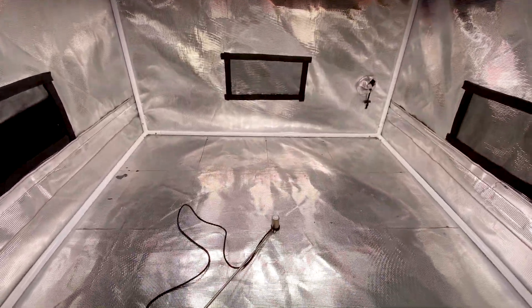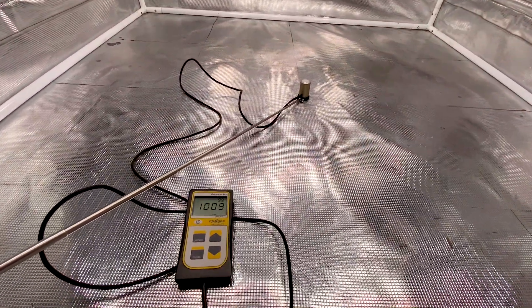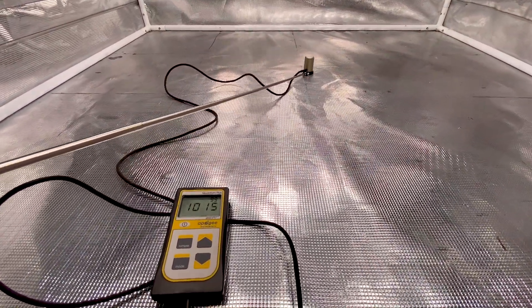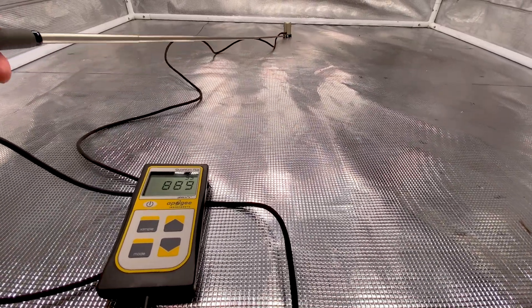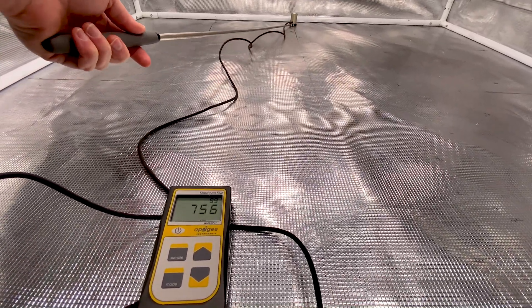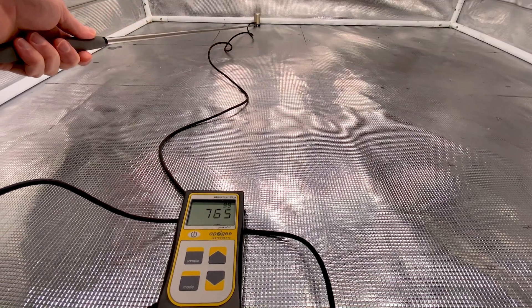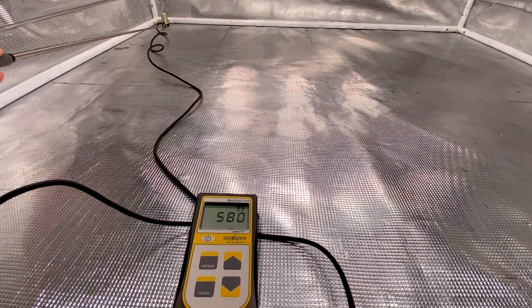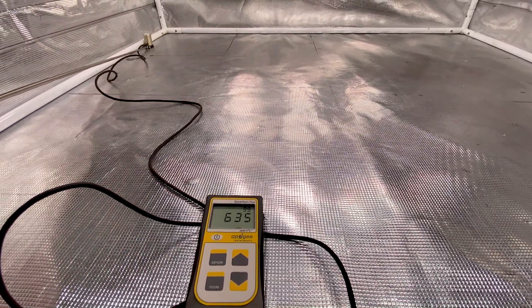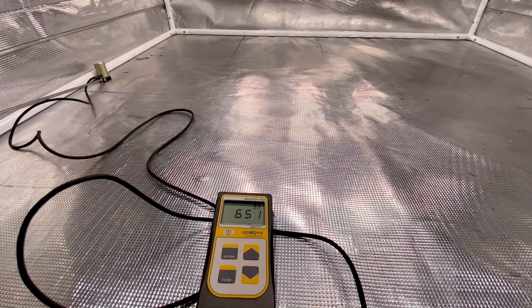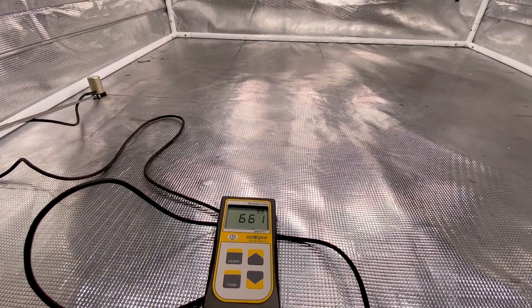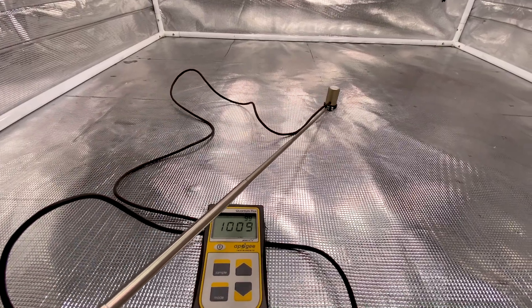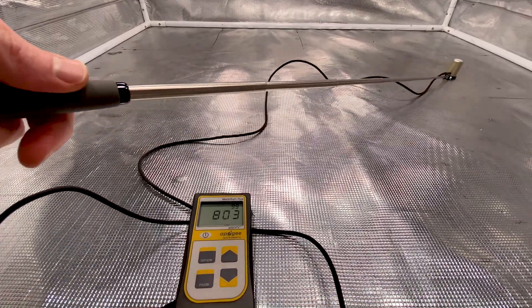The next readings at 24 inches where we're getting just over 1000 PPFD. To the back you can see the uniformity dropping about 770 and into the corner about 580 and this other side just about 650. So 24 inches great distance for flowering.